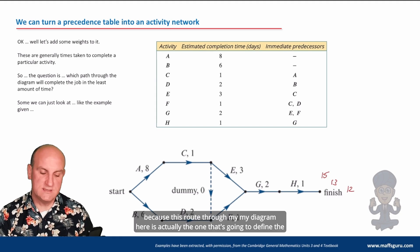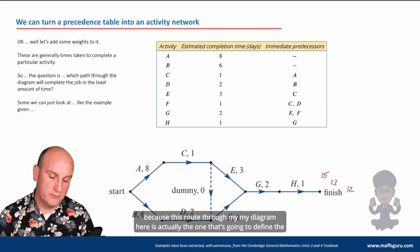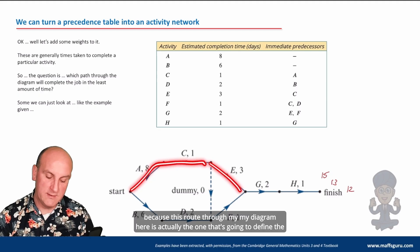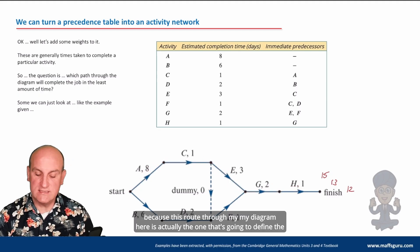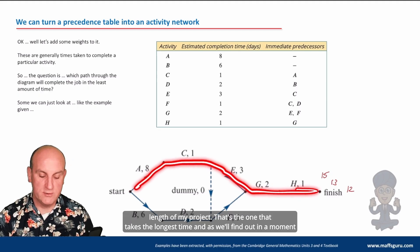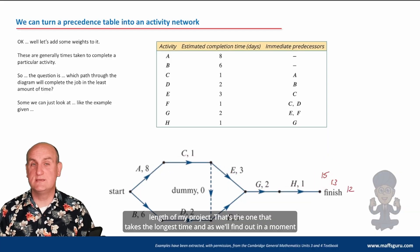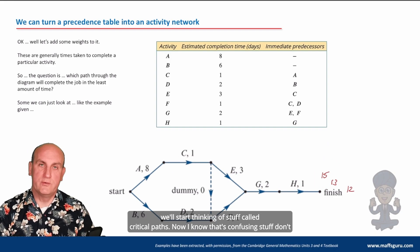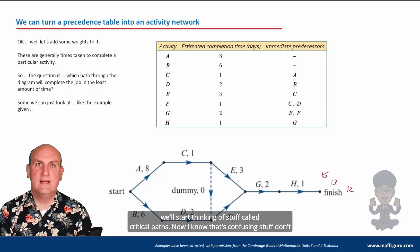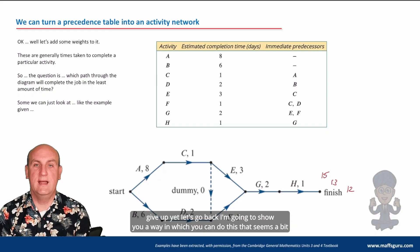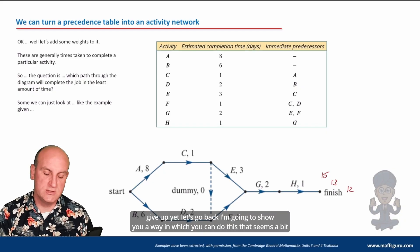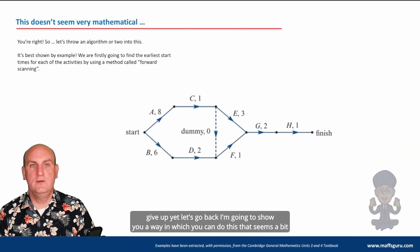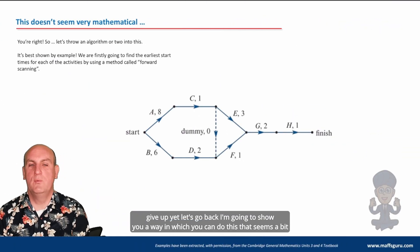It doesn't matter that some routes are shorter, because the route that takes the longest time — 15 days via A–C–E–G–H — is the one that defines the length of the project. We'll find out in a moment about something called critical paths. Now I'm going to show you a more mathematical way to do this using earliest start times and latest start times.